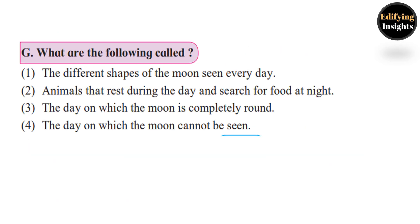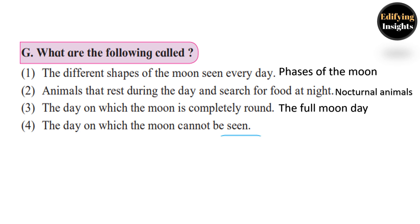What are the following called? 1) The different shapes of the moon seen every day — faces of the moon. 2) Animals that rest during the day and search for food at night — nocturnal animals. 3) The day on which the moon is completely round — the full moon day. 4) The day on which the moon cannot be seen — the new moon day.